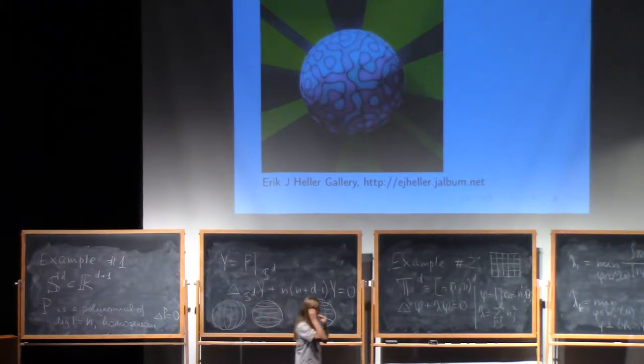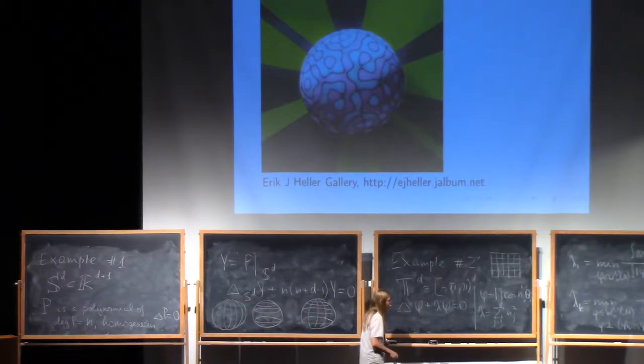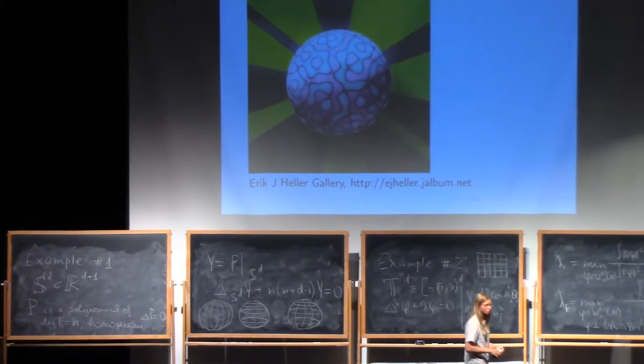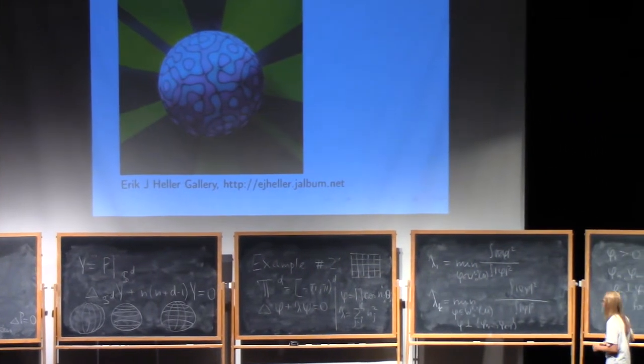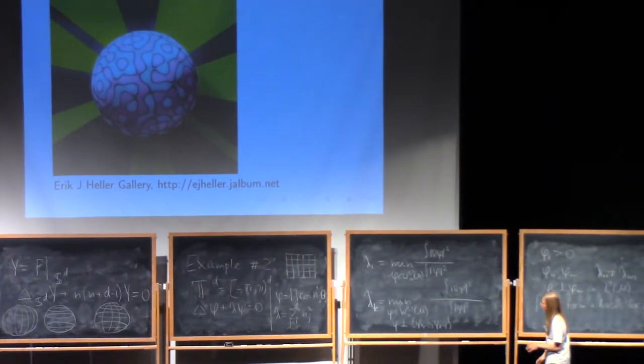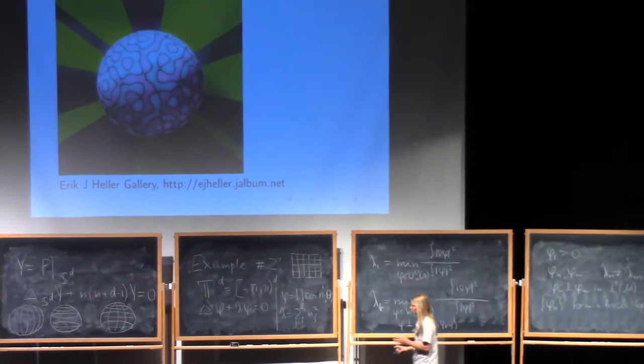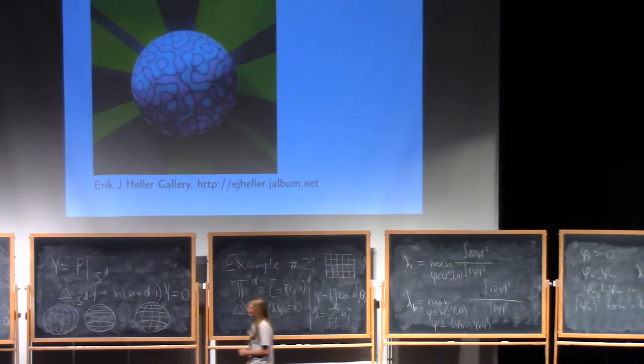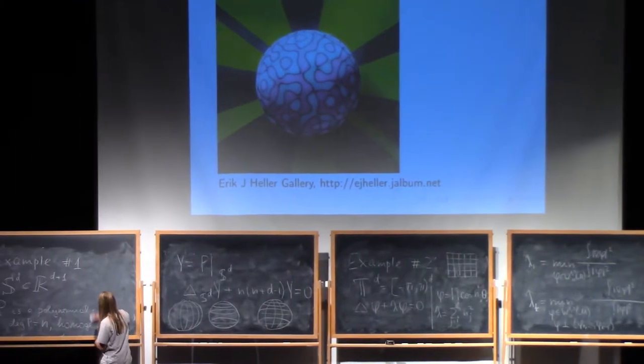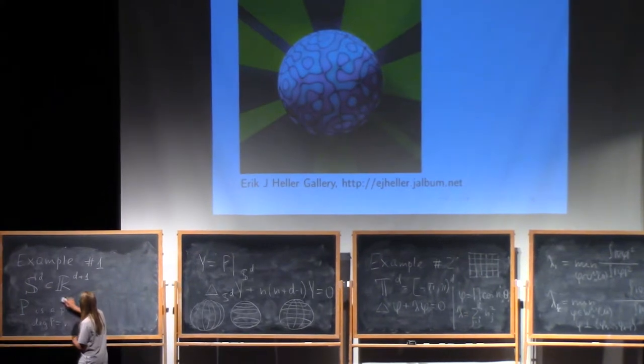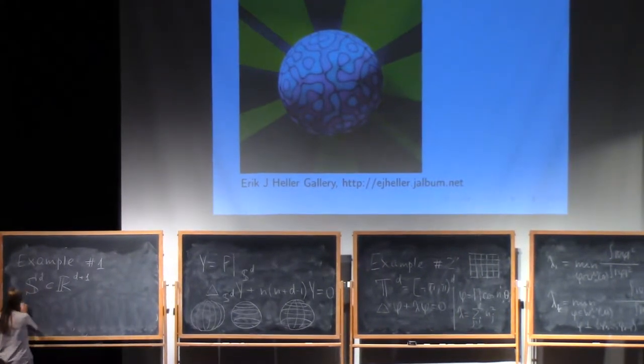So there is no precise Courant nodal domain theorem as we go to higher dimensions. The eigenvalue doesn't control the number of nodal domains. But still, looking at the picture, you can guess what your eigenvalue is.